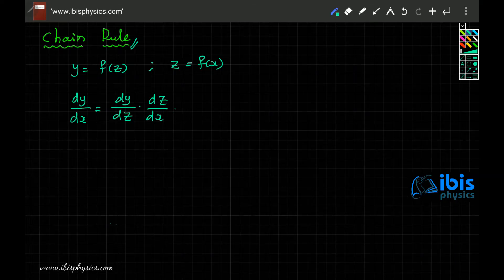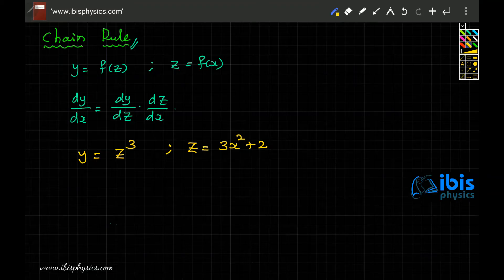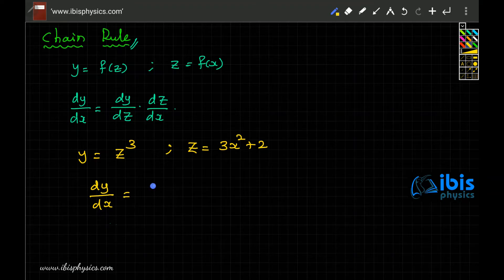So how is that? The first thing is suppose our example problem: y equal to z³, but z is actually equal to 3x² + 2. Then in such case first dy/dx is actually dy/dz into dz/dx.